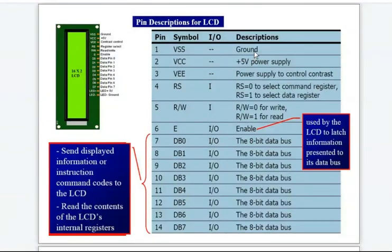Pin number 1 is the ground pin, pin number 2 is the power supply pin. The LCD module operates on 5-volt power supply. Pin number 3 is the contrast control pin.